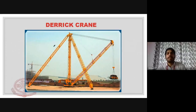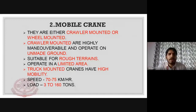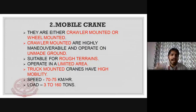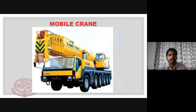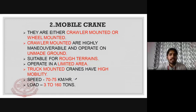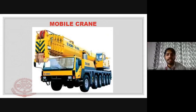Mobile cranes are either crawler-mounted or wheel-mounted. Crawler-mounted cranes are highly maneuverable and operate on unmade ground. Wheel-mounted cranes can travel at speeds of 70 to 75 kilometers per hour and can handle 3 to 160 tons. Truck-mounted cranes have high mobility.